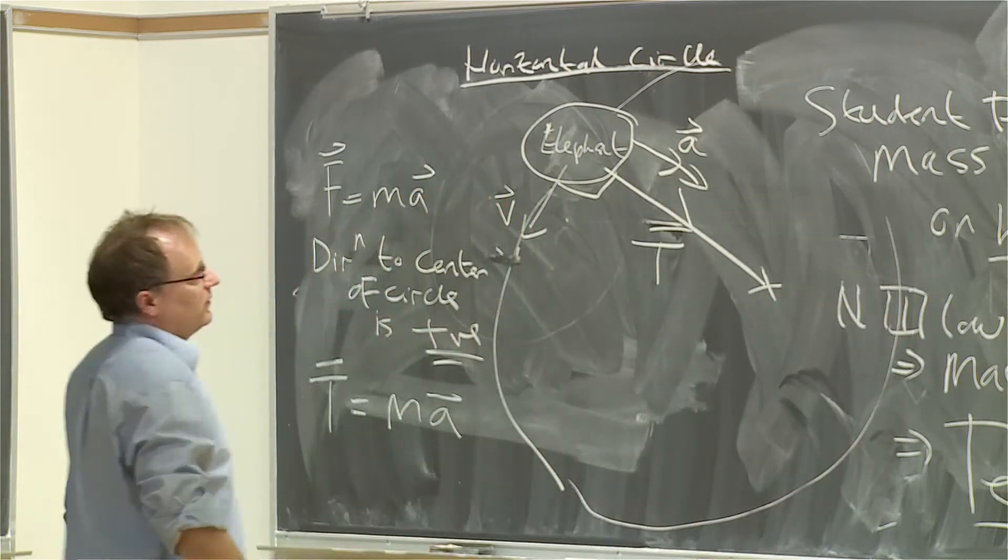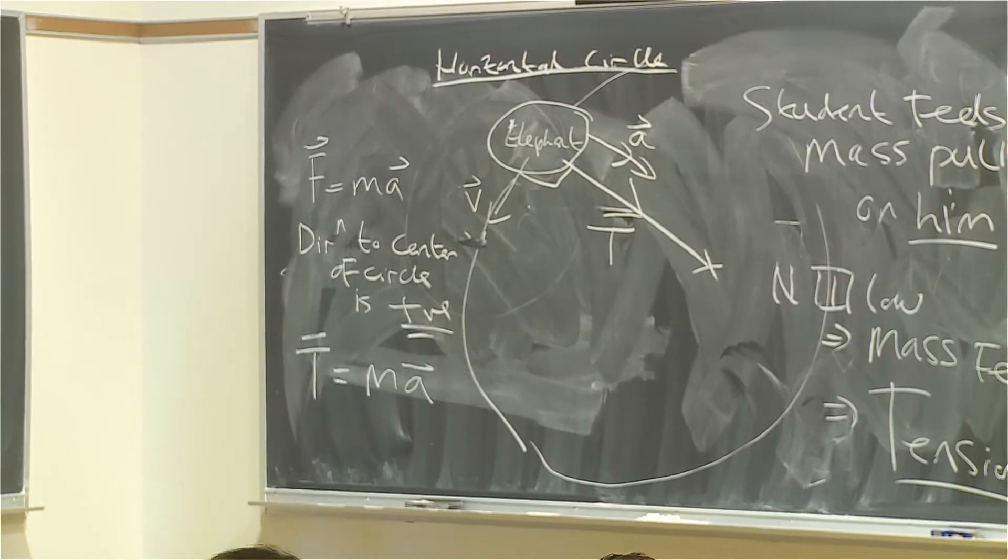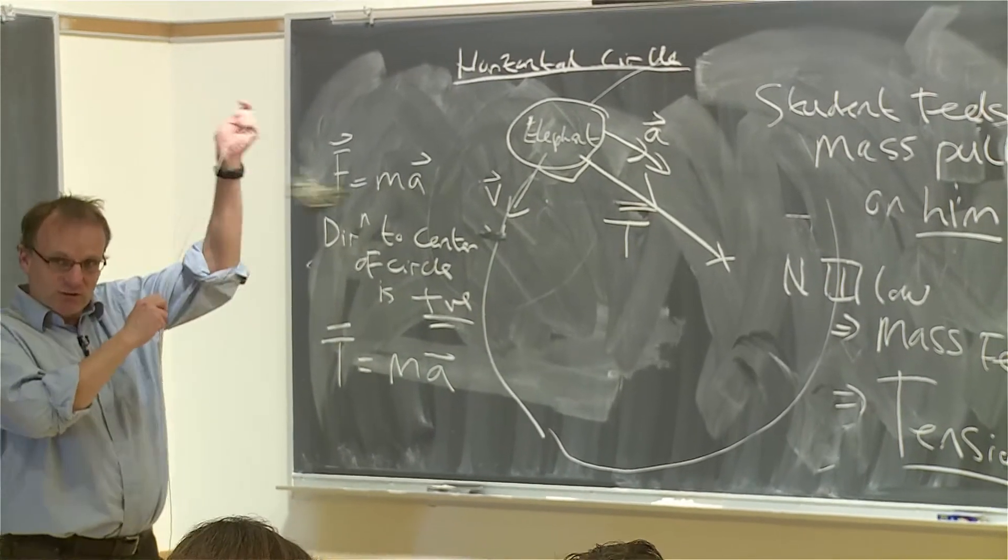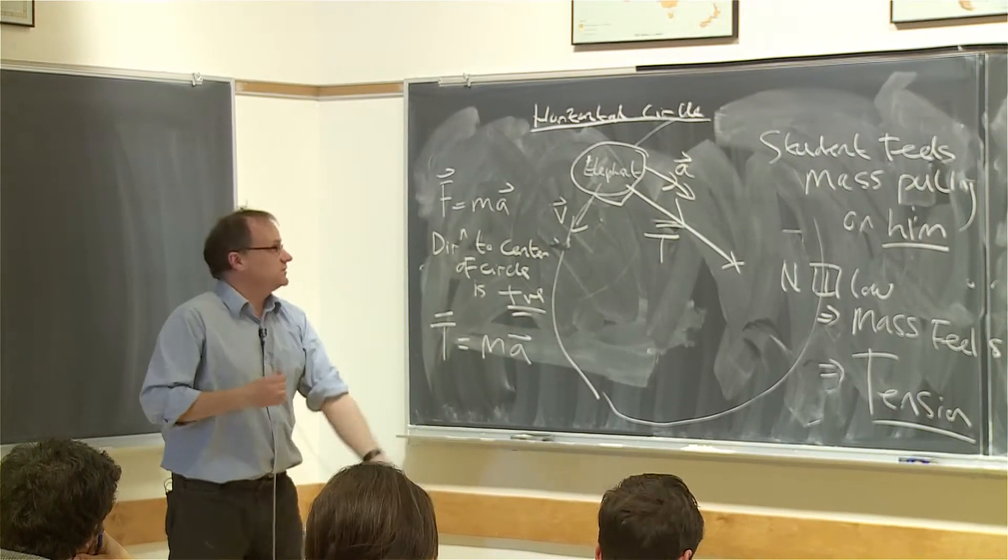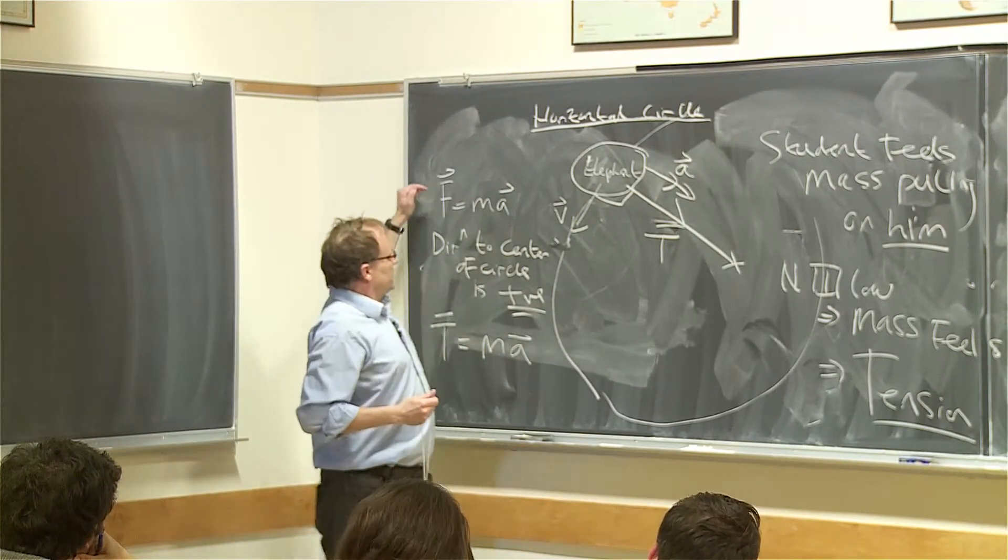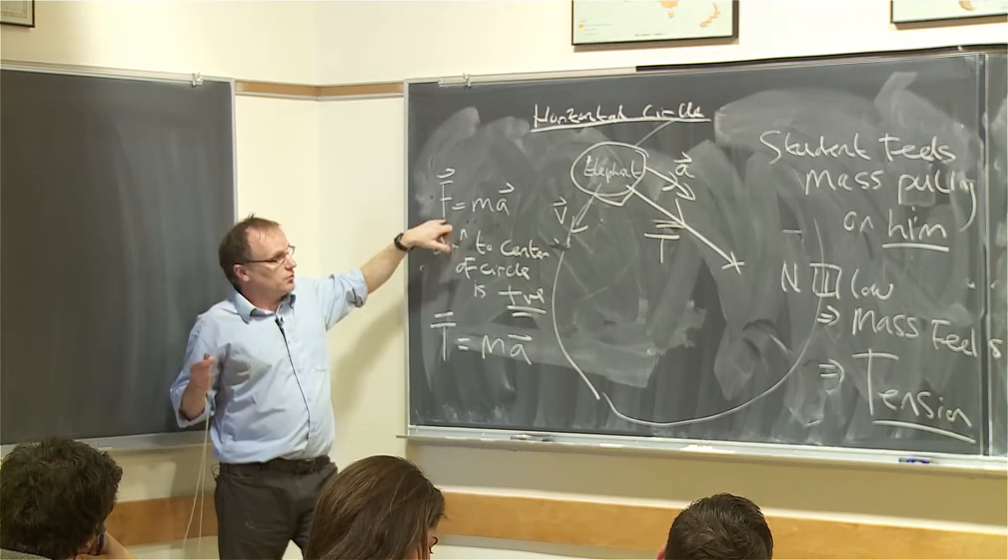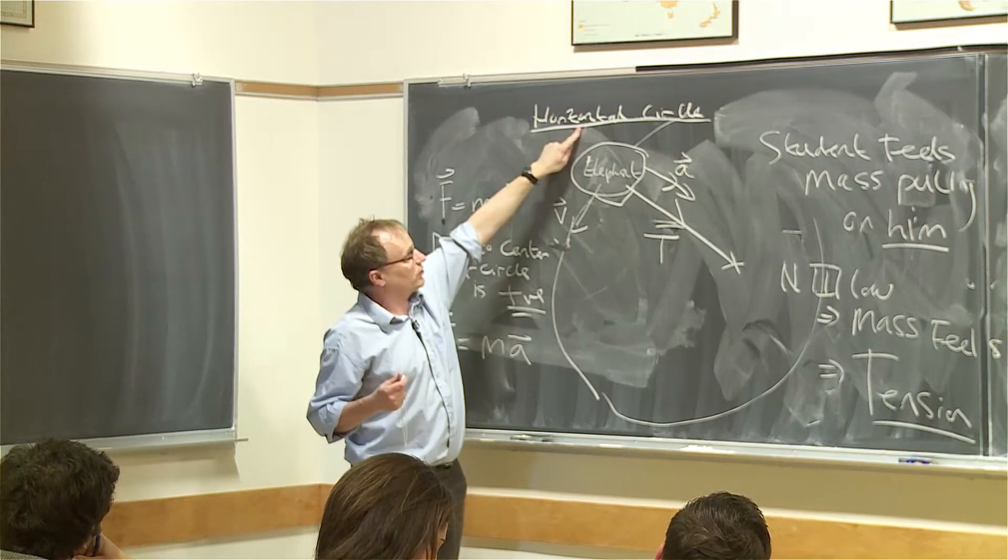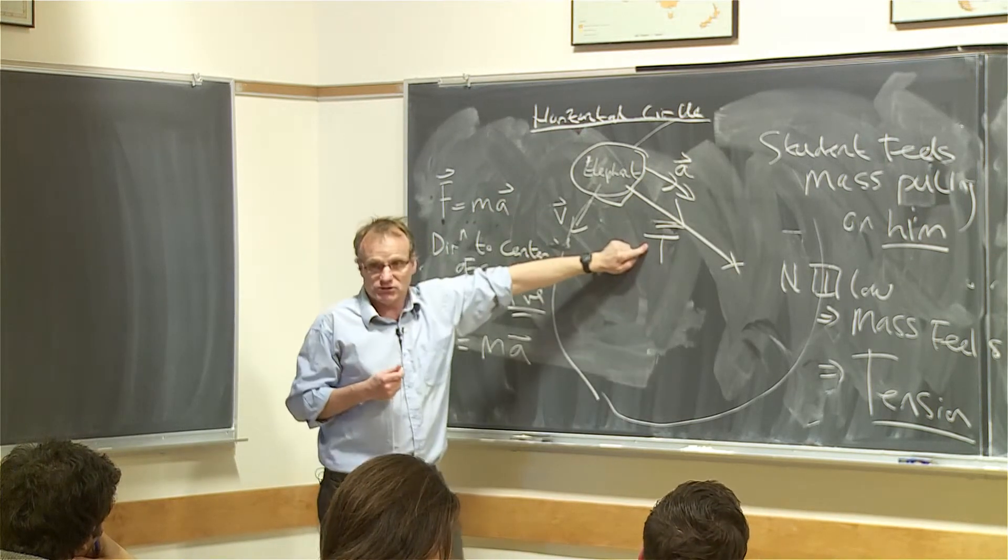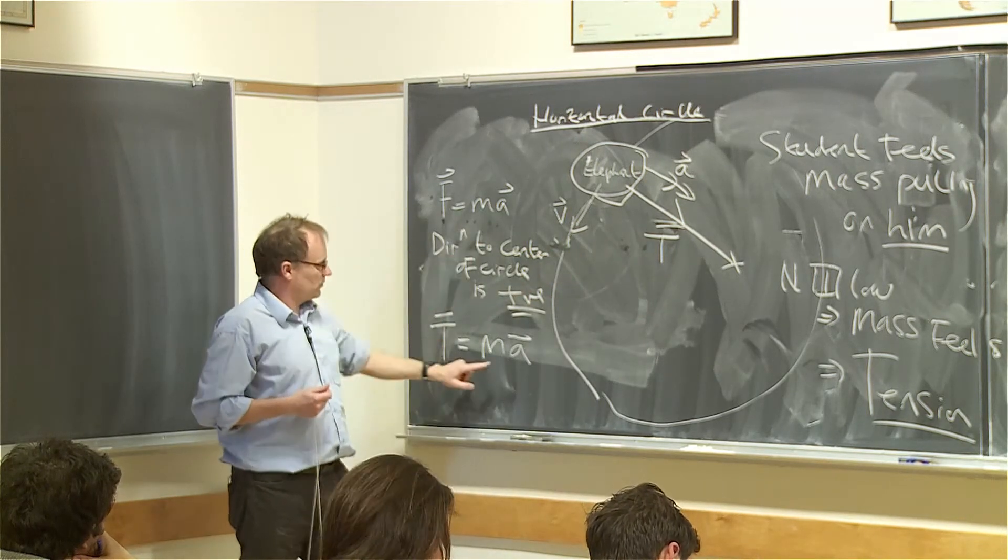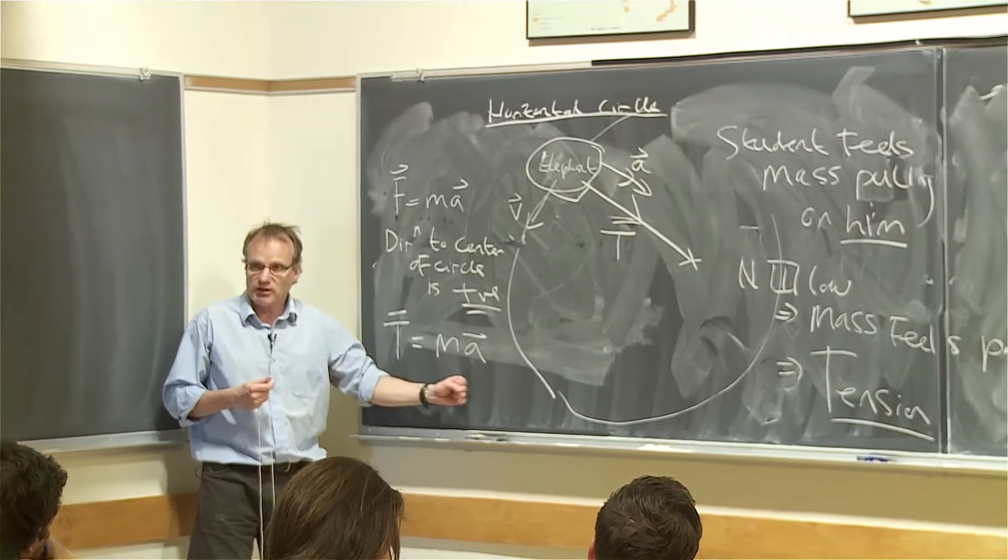So the acceleration is towards the center of the circle. Whenever something moves in a circle, it's not intuitive. But whenever something moves in a circle, the acceleration, first of all, you know the acceleration has to be in the same direction as the force. Newton's second law. You know that the only force on the elephant in a horizontal circle, in this plane, is the tension. So we write F equals MA, T equals MA. These have to be in the same direction, so the acceleration must be towards the center of the circle.